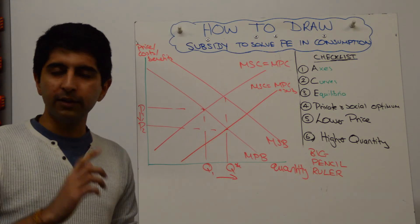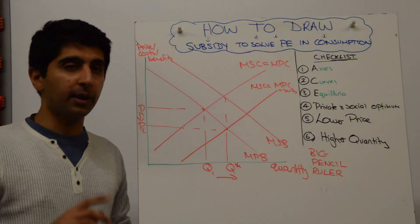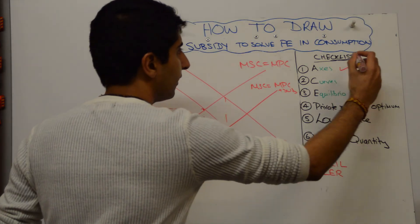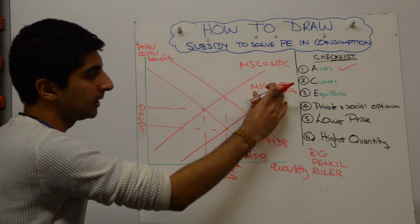Then you go through your mental checklist. This only takes 30 seconds, but it's worth spending the time to do. Have you labeled your axes? Always check. Have you labeled the curves? Check.